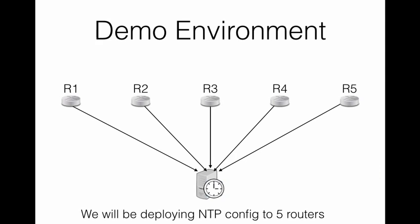This is our environment. We have five routers — R1, R2, R3, R4, and R5 — and we're going to deploy that NTP config, that one line of code to point to an NTP server, to all five of those routers.